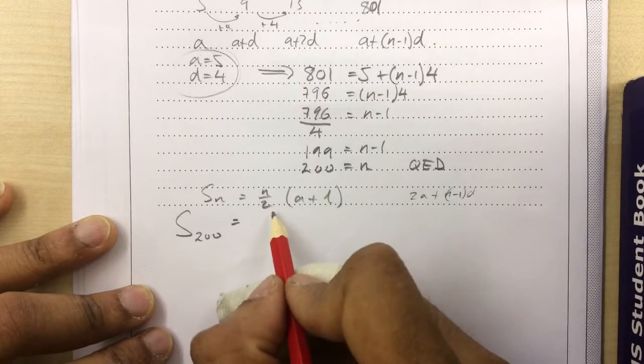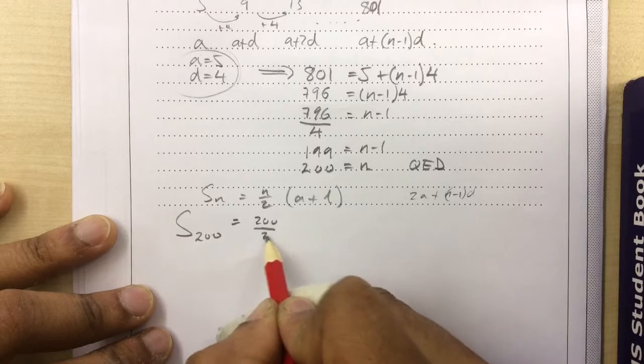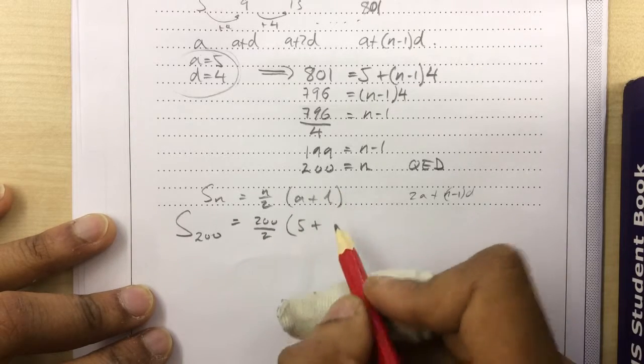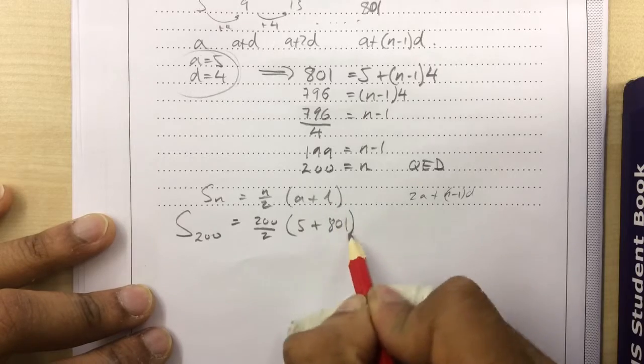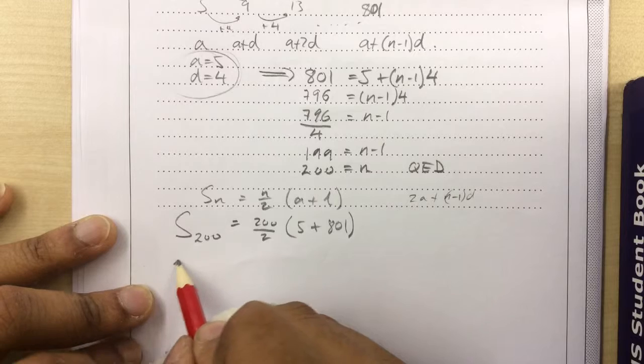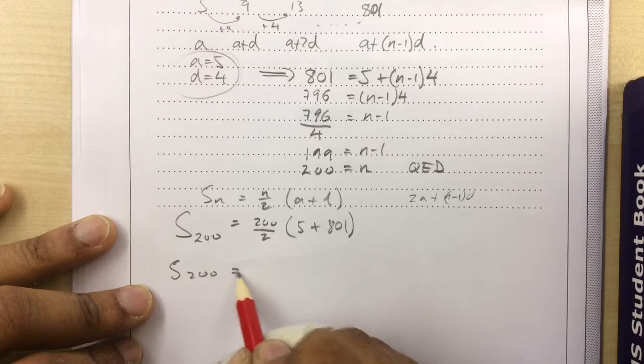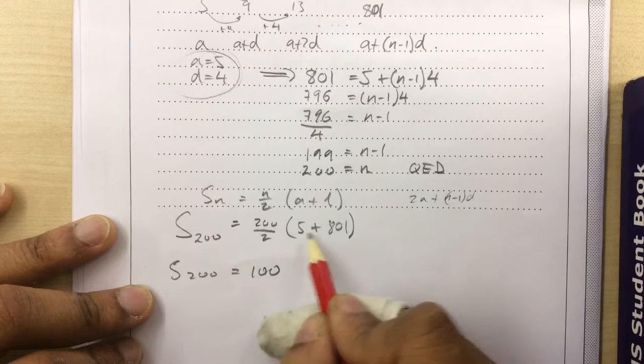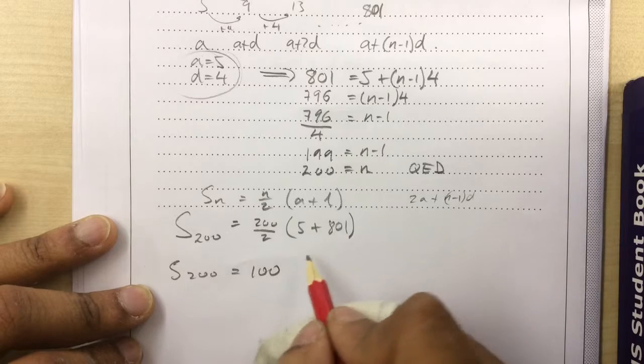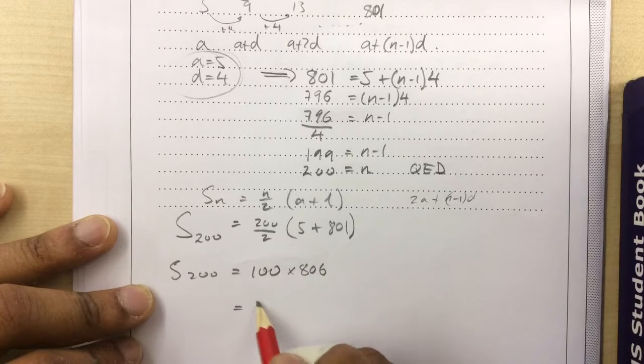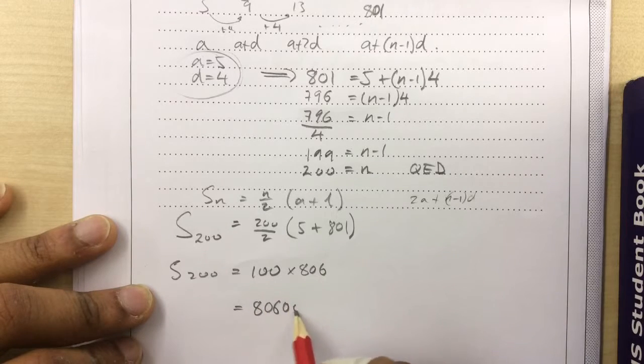So N over 2 is 200 divided by 2, A which is 5, plus L which is 801. We just use that. So S200 equals 100 times 5 plus 801, which is 806, equals 80,600.